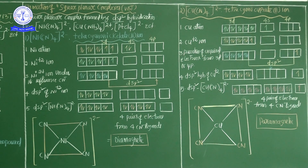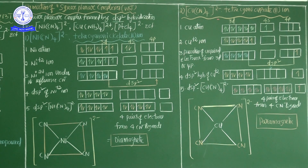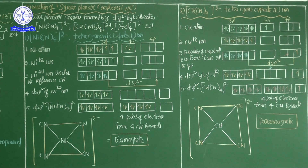One more example from the square planar structure is tetracyano cuperate 2 ion — a very special compound. The oxidation state of copper in this complex is plus 2. During formation, the only unpaired 3D electron of Cu²⁺ gets promoted to one of the 4P orbitals, making one vacant d-orbital available. The Cu²⁺ ion therefore undergoes DSP2 hybridization to form square planar structure.